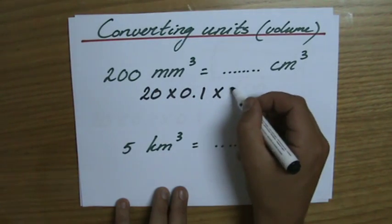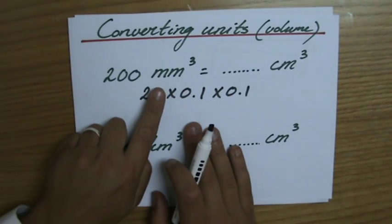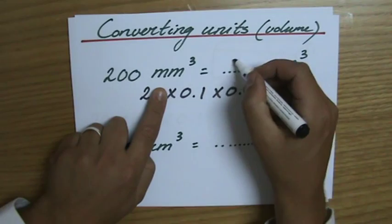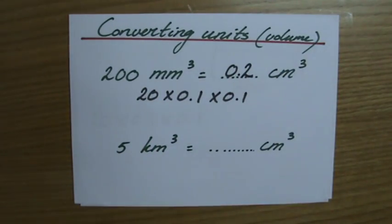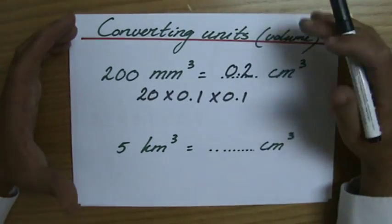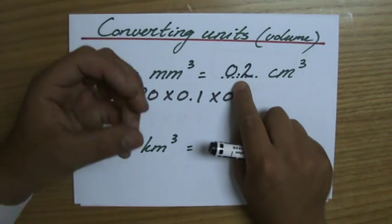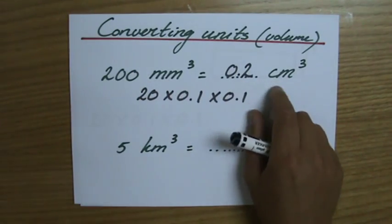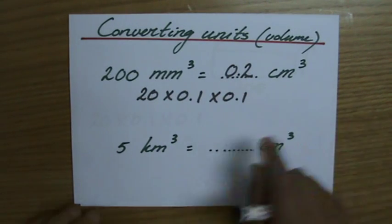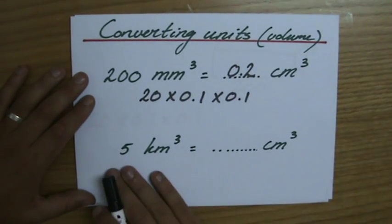So the question becomes 20 × 0.1 × 0.1. Now, 20 × 0.1 = 2, and 2 × 0.1 = 0.2. So a 200 millimetre cube, which sounds like quite a large volume, is actually only 0.2 — that's two tenths, or one fifth — of a centimetre cube. Really, really small.